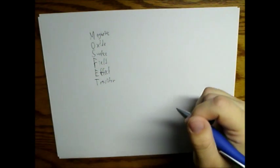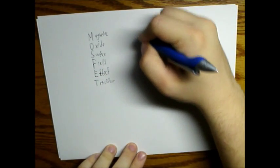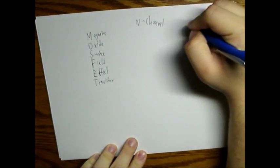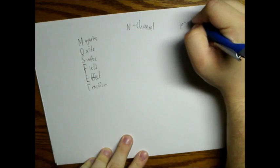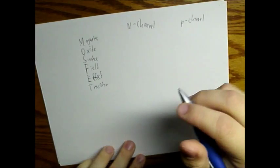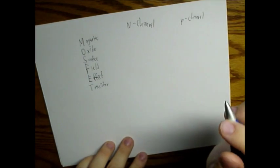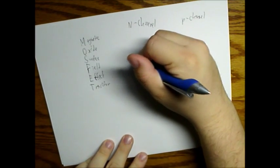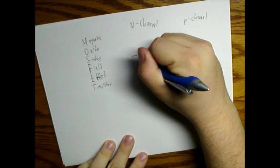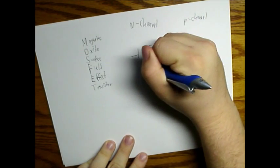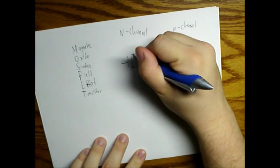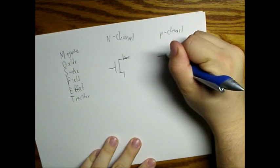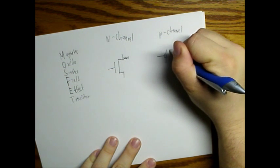These are the two types that we will be using: N-channel and P-channel. Here is what each channel looks like. I will draw the P-channel with a little dot and then draw the rest.